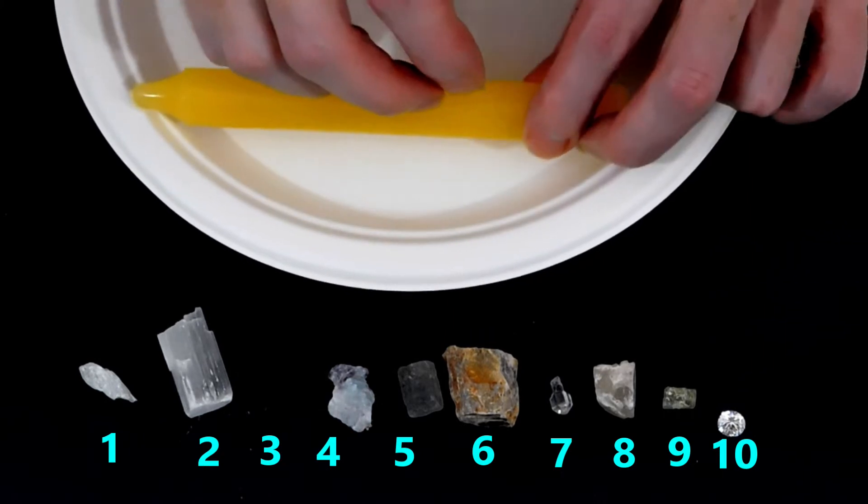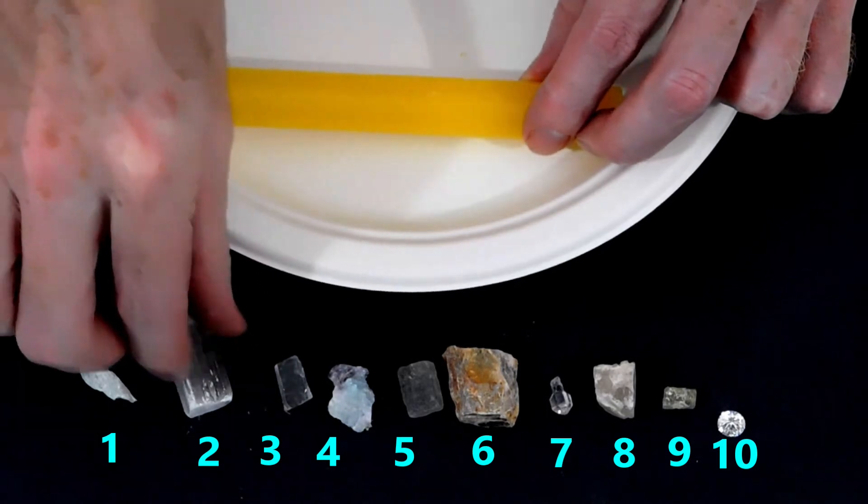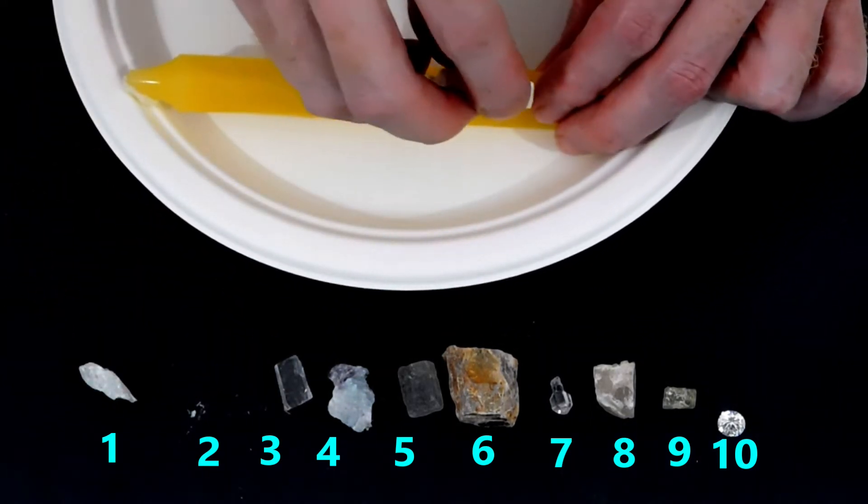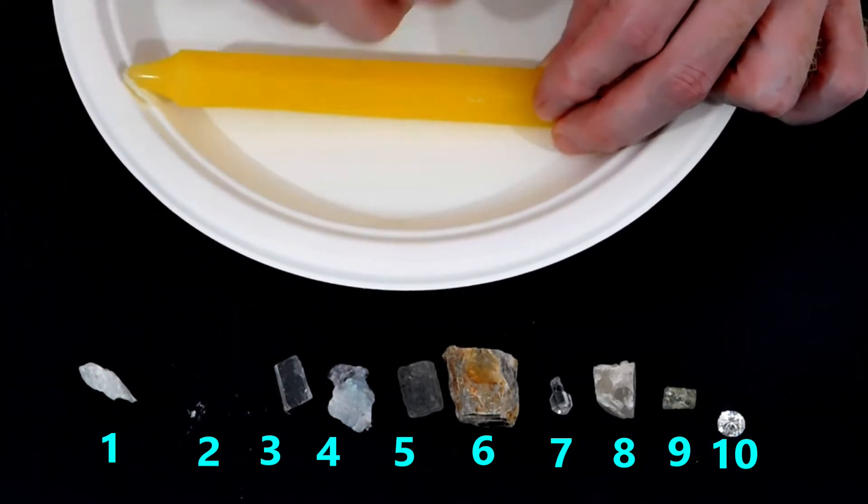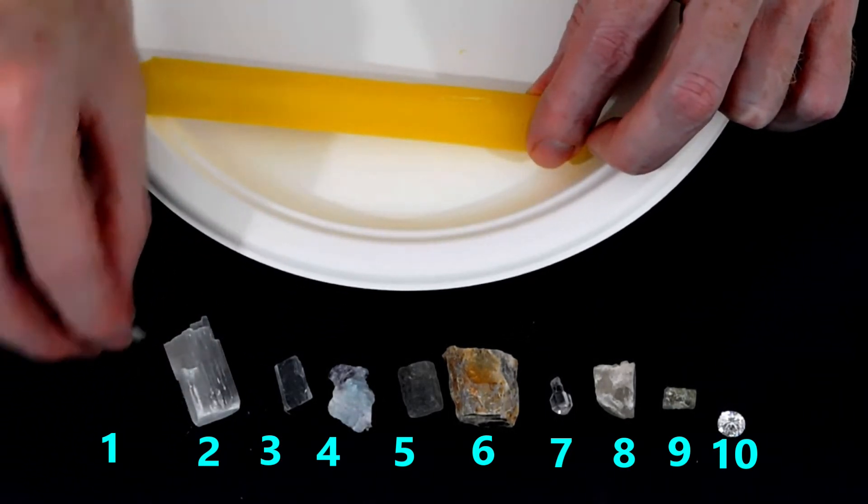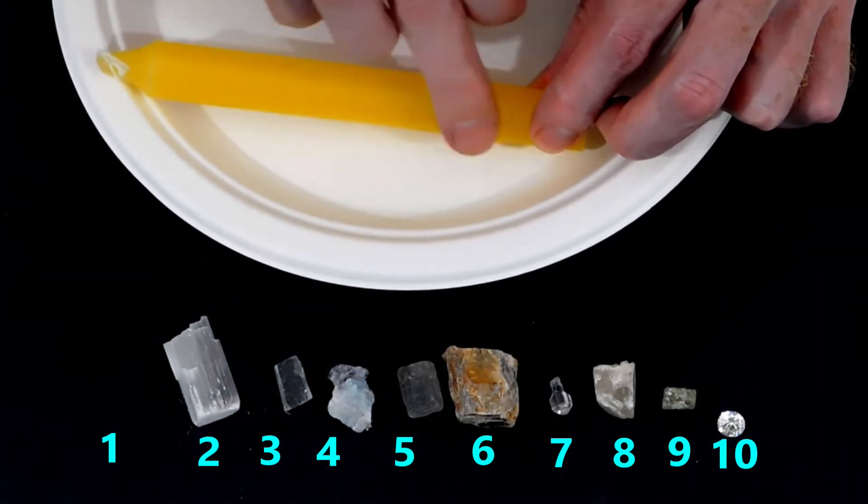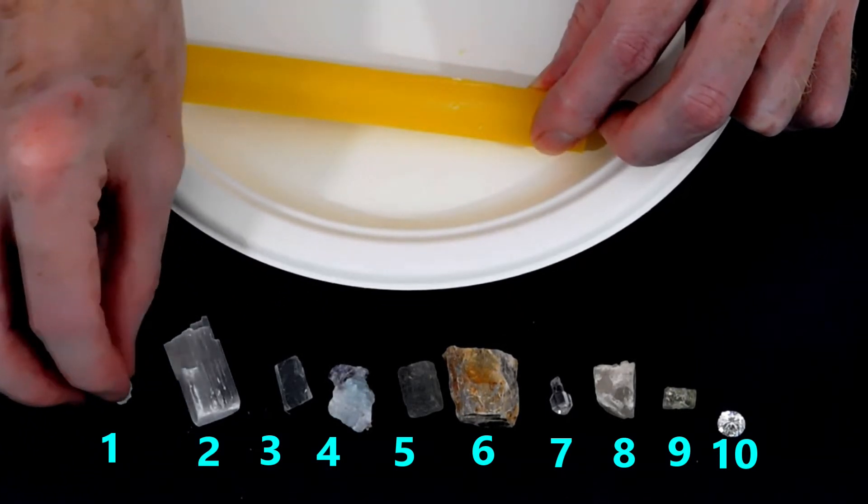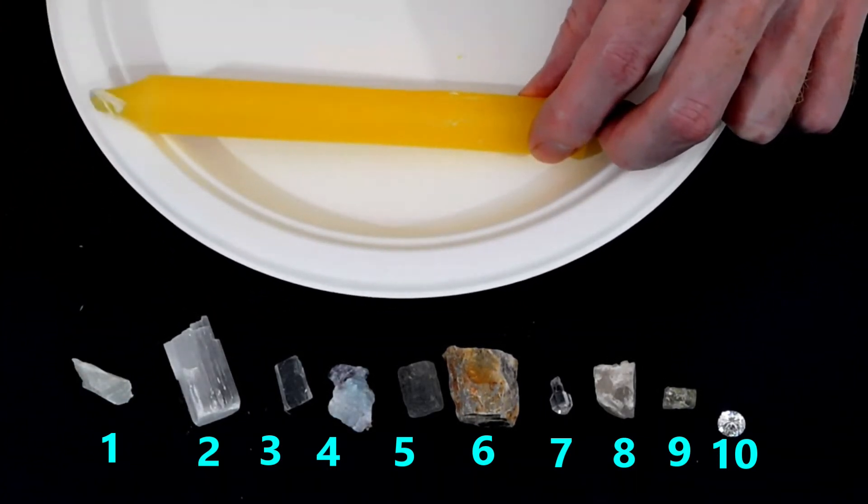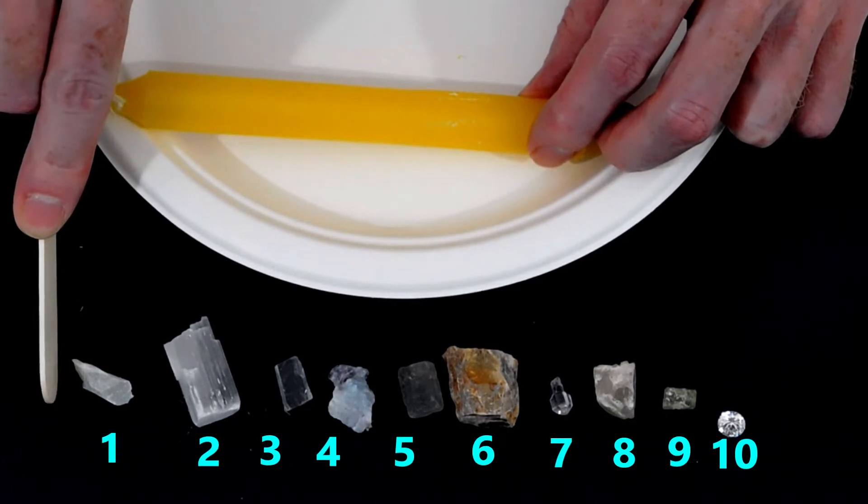Next we try calcite and it scratches the candle too. Now we try gypsum and it scratches the candle. Finally, we try talc and it also scratches the candle. This tells us that the talc is harder than the wax candle. So the candle has a Mohs hardness scale value of less than 1. Since there are no negative numbers on the Mohs hardness scale, the candle has a value that is between 0 and 1.